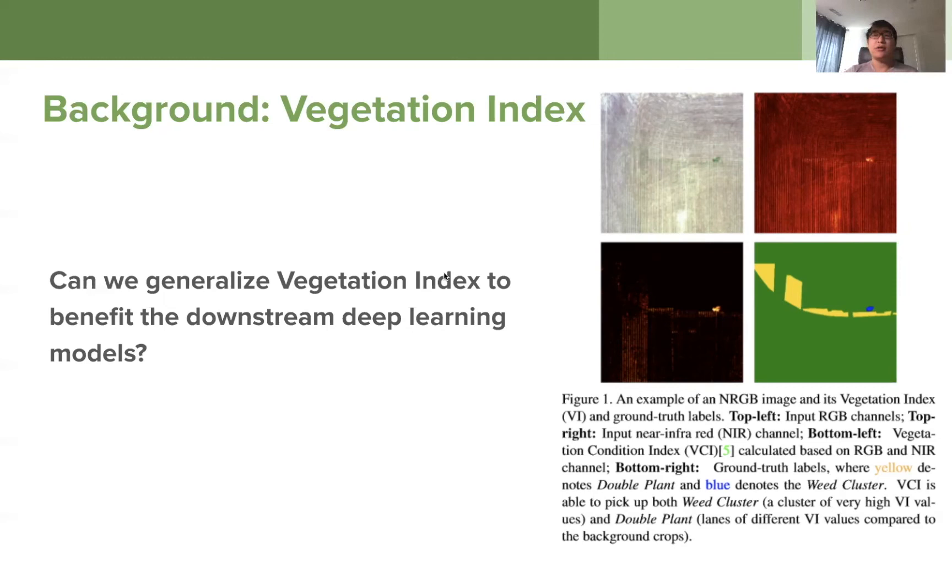Okay, so the general question we propose here is can we generalize vegetation index to benefit the downstream deep learning models? So can we leverage the feature engineering knowledge before deep learning to benefit the deep learning models? This question is actually pre-reacted into two parts. The first one is how? How can we generalize the vegetation index? And the second one is why? Because people might be wondering like if deep learning models, they have so much more capacity than previous machine learning models, can they actually extract those features by themselves? So we're going to answer the how question first.